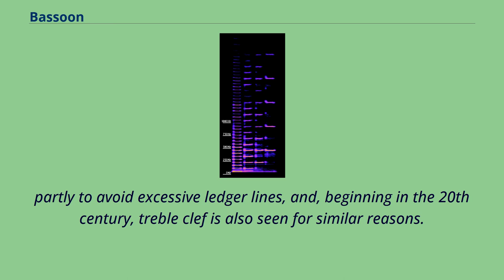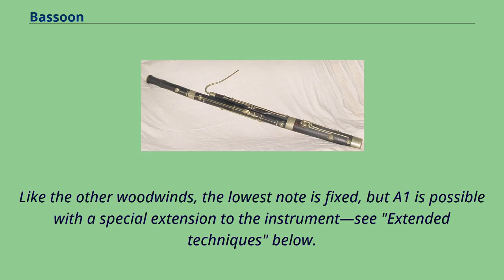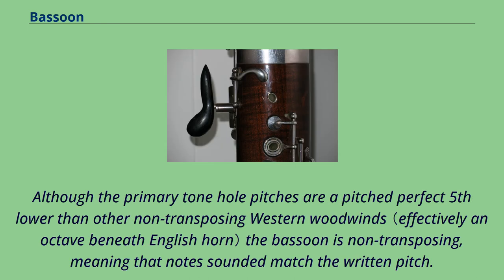Like the other woodwinds, the lowest note is fixed, but A1 is possible with a special extension to the instrument. Although the primary tone hole pitches are a perfect fifth lower than other non-transposing western woodwinds, the bassoon is non-transposing, meaning that notes sounded match the written pitch.